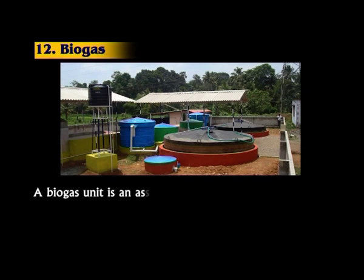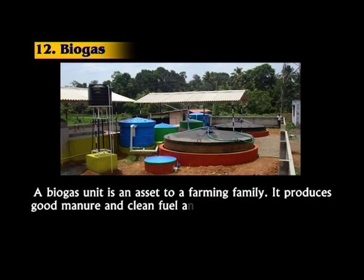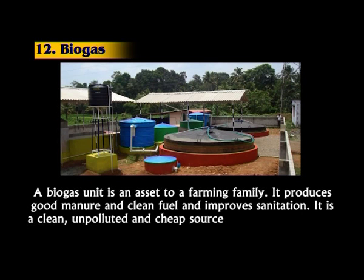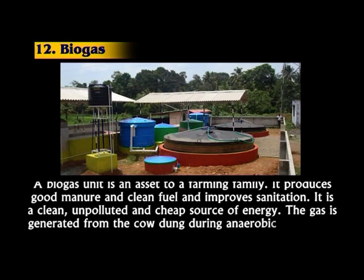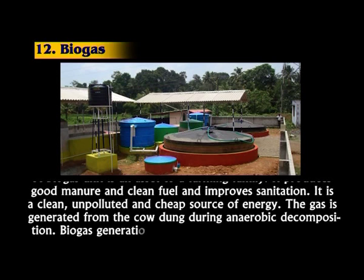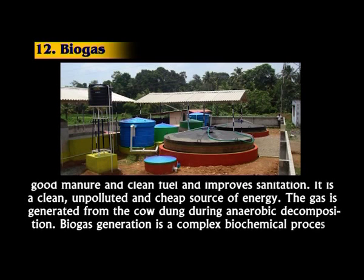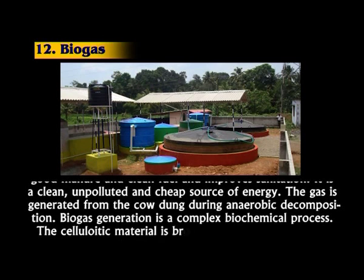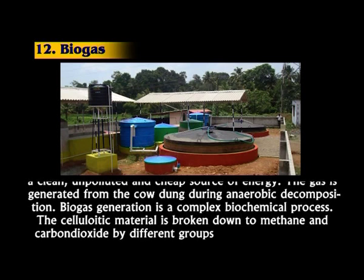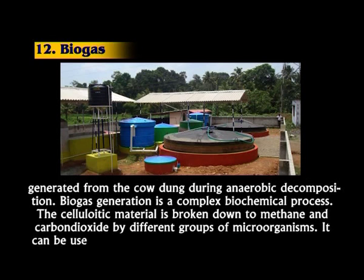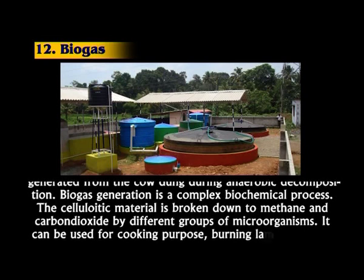Next is biogas. A biogas unit is an asset to a farming family. It produces good manure and clean fuel and improves sanitation. It is a clean, unpolluted, and cheap source of energy. The gas is generated from cow dung during anaerobic decomposition. Biogas generation is a complex biochemical process; the cellulosic material is broken down to methane and carbon dioxide by different groups of microorganisms. It can be used for cooking, burning lamps, running pumps, etc., thus ensuring higher and efficient resource use efficiency.